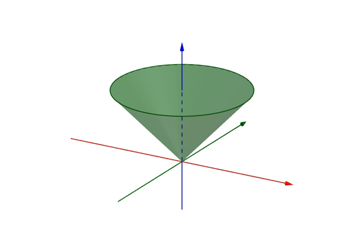In linear algebra, a convex cone is a subset of a vector space over an ordered field that is closed under linear combinations with positive coefficients.